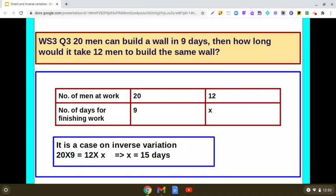So what is the final answer? 15 days will be taken by 12 men for building the same wall. I hope the question is clear to you.